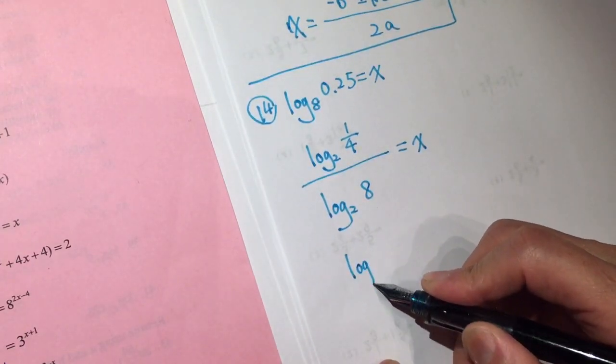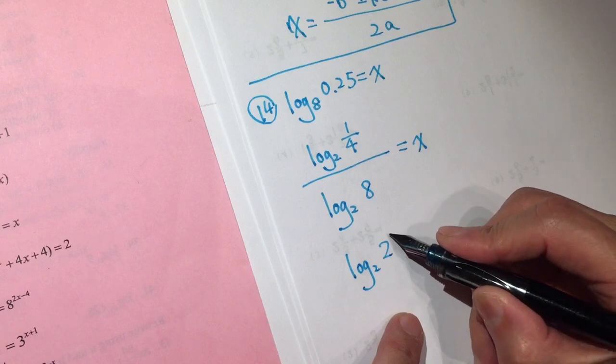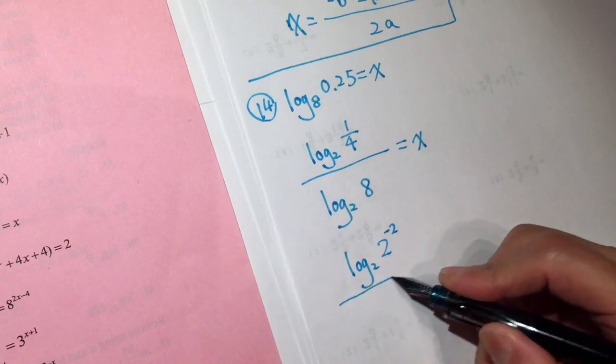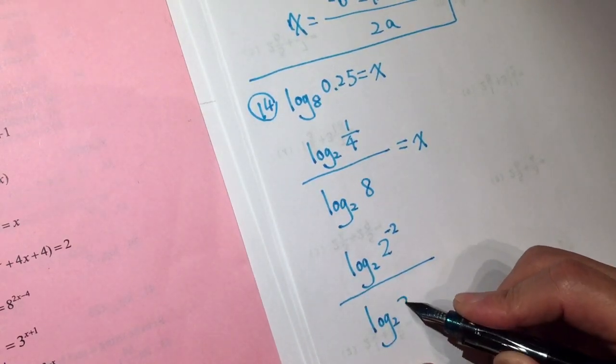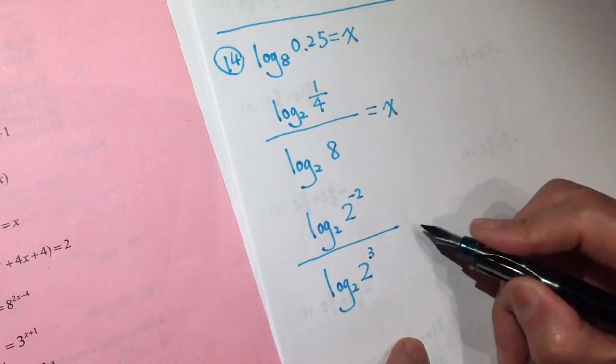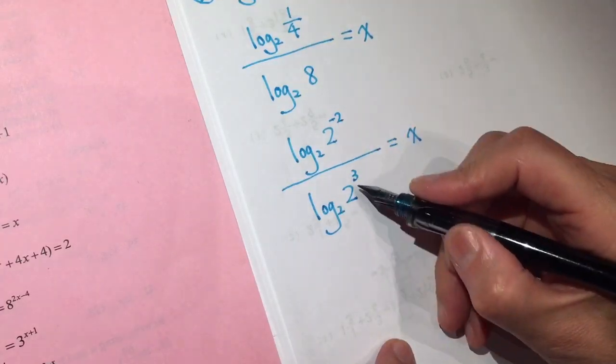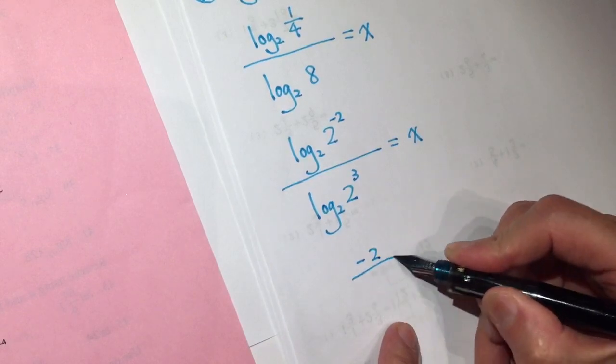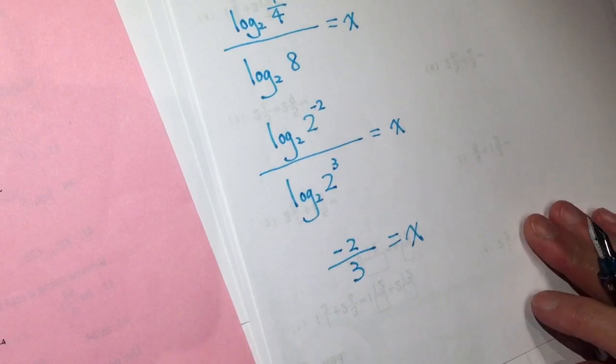So, log 2 of 2 to the power of negative 2, right, over log 2 of 2 to the power of 3 equals X. So this becomes negative 2 divided by 3 equals X.